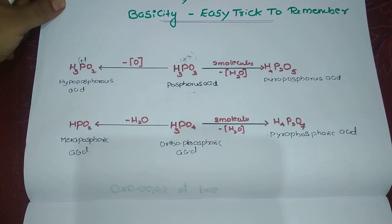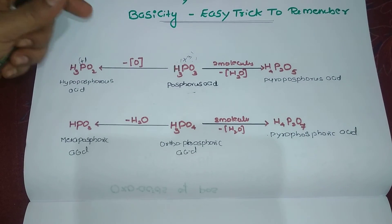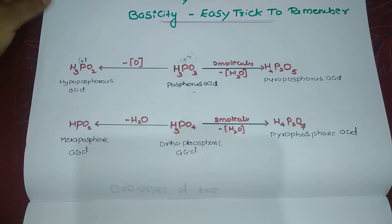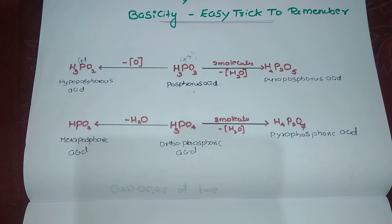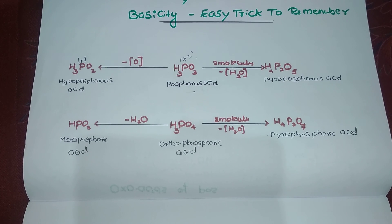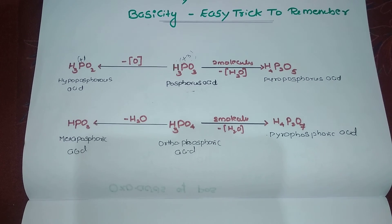I am going to upload this PDF file in my Telegram channel. I hope you find this video very useful. In the next video we will discuss the oxo acids of the remaining elements - sulfur, nitrogen, and some of the halogens.